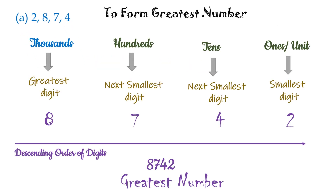In Part A, for the greatest number to be formed, हम digits को descending order में place करेंगे. Means सबसे बड़ा digit सबसे बड़ी position में होगा, जो की extreme left में — thousands place पर है. और then next digit हमें smaller choose करनी है, जैसे की यहां दिखाया गया है. So, greatest number would be 8742.